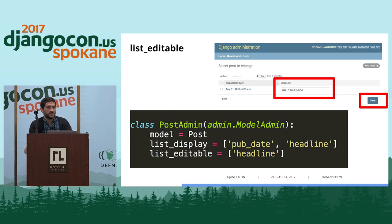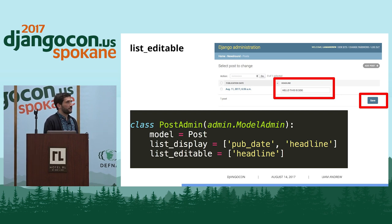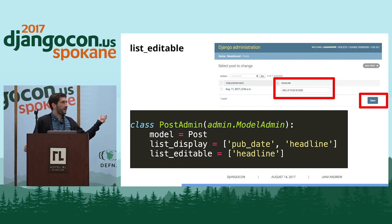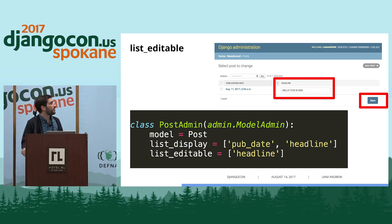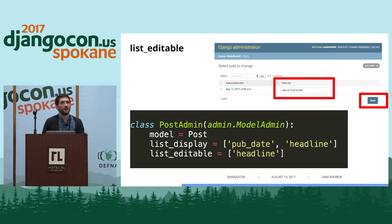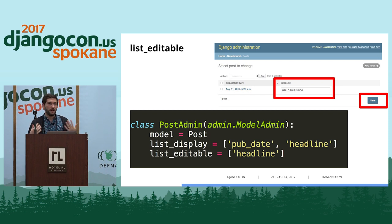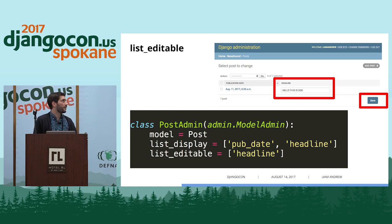Another handy trick is list_editable. This turns a field into an open text field you can edit from the list view. If you had 100 items, you can edit all 100 at once and then click save at the bottom. We find this one stresses people out a bit, but it's particularly handy for cleanup sprints. At the Texas Tribune we have a lot of messy tag data, so during cleanup sprints I made fields list_editable — that was really helpful for getting in there quickly, making big alterations, and saving.